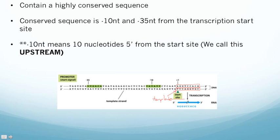In order for the cell to know where to start transcribing, it has to have special parts of the DNA that tell it to start at the transcriptional start site. The way it does this is through the use of promoters. Promoters are sequences of DNA that are found upstream from the transcriptional start site — upstream typically meaning before the start site.